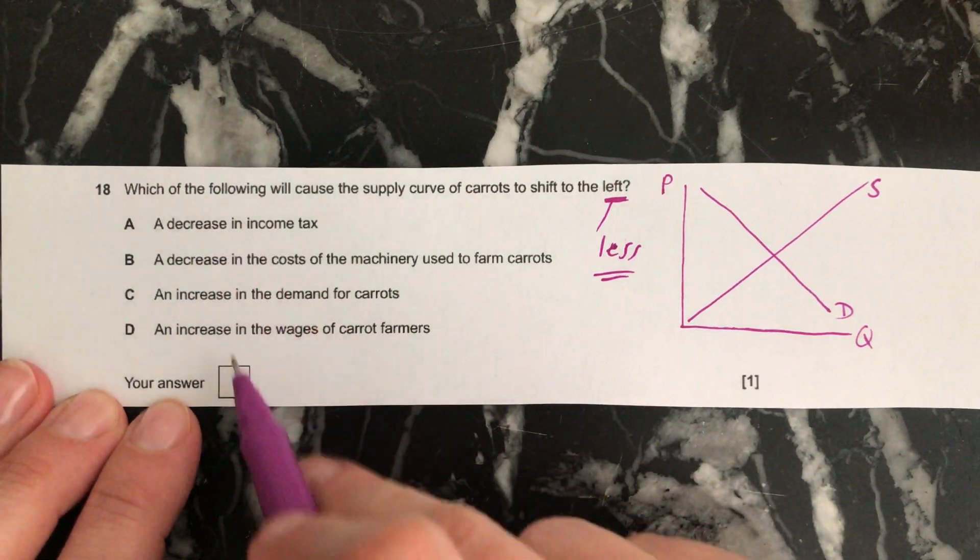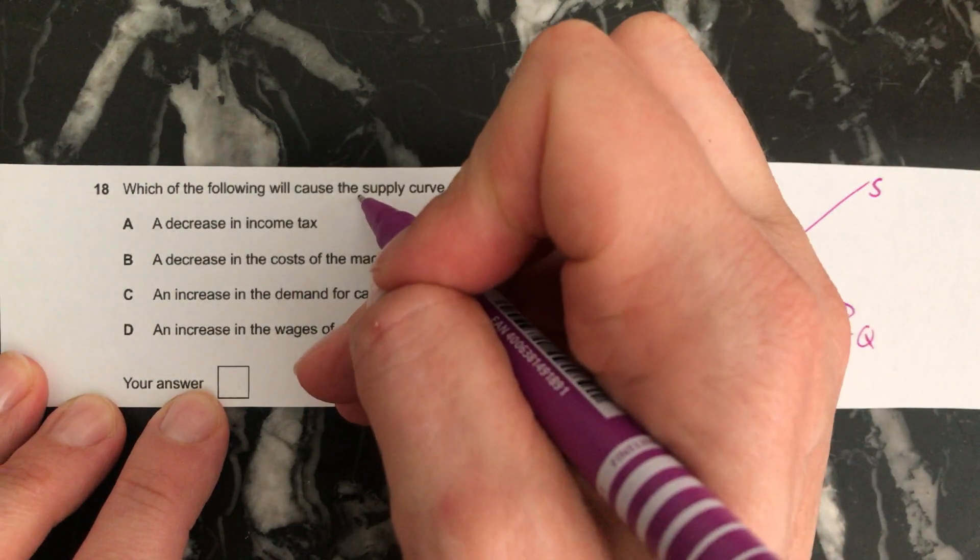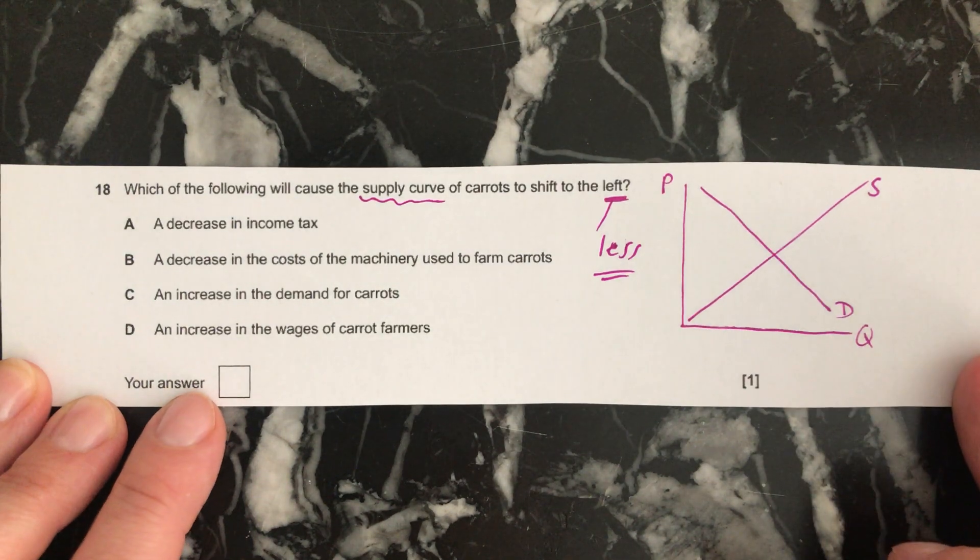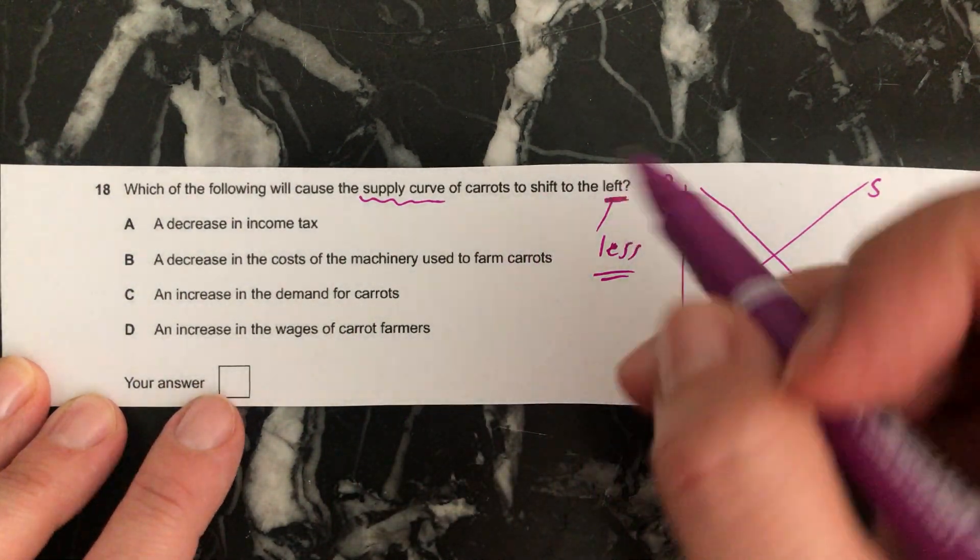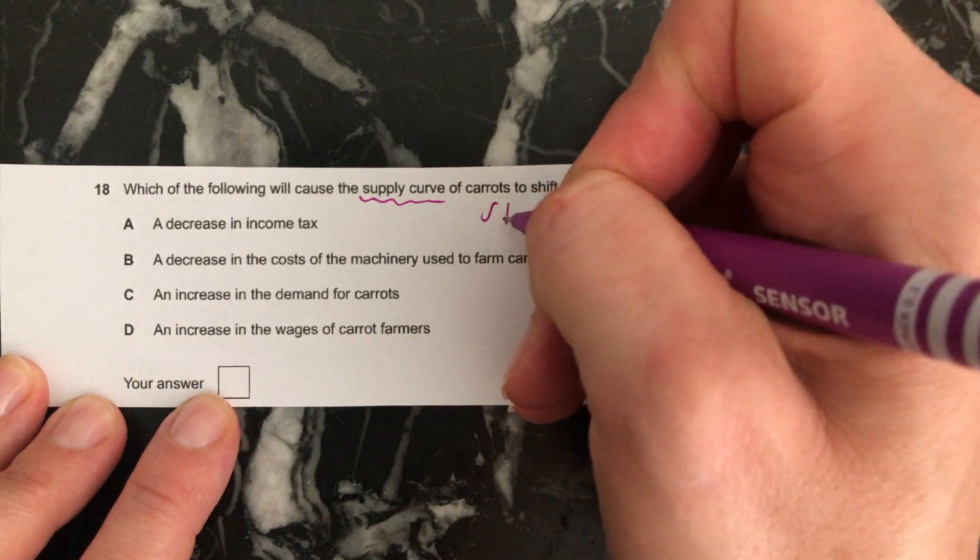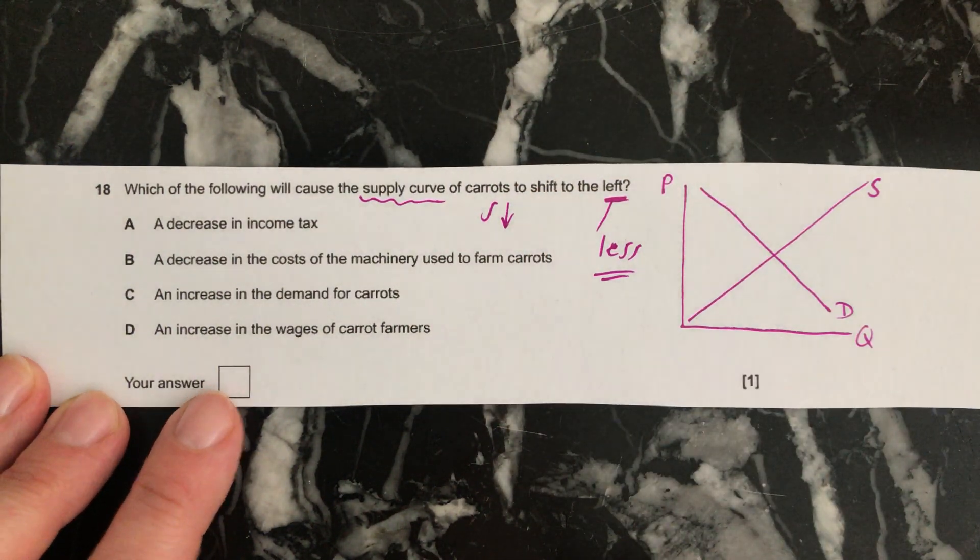Very important when you're looking at questions like this, you need to make sure that it's talking about the supply curve, not the demand curve. So let's have a look. We want to know why would supply go to the left? So why would supply go down of carrots?